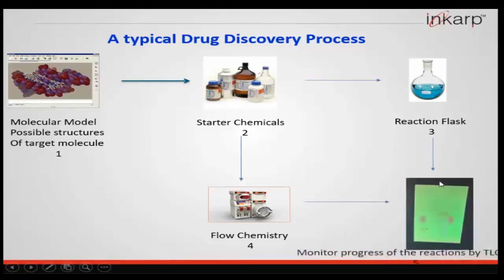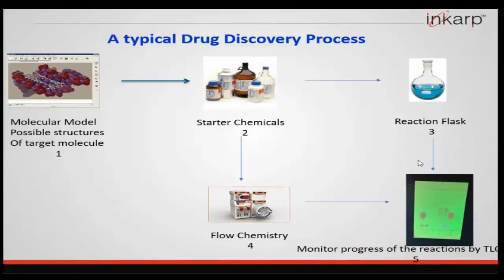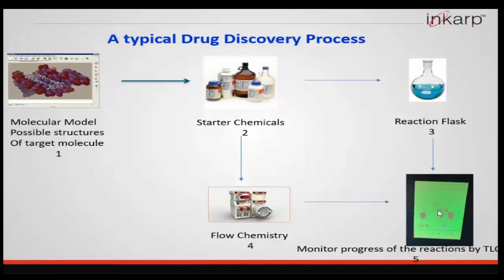Before going to the instrumentation part — how do we monitor the progress of the reaction? The best, most economical, and quickest way is monitoring reaction progress using a TLC plate. We spot the starting materials and the reaction mass and monitor the progress. TLC gives a lot of information: the concentration of starting materials present, the quality of product forming, how the reaction is driving in a positive direction, or whether at a certain point the reaction may not be proceeding further.